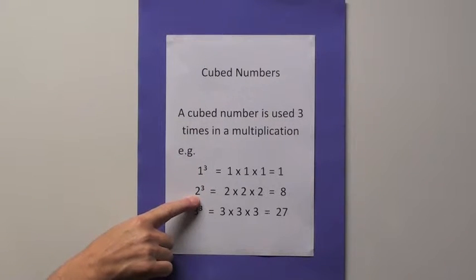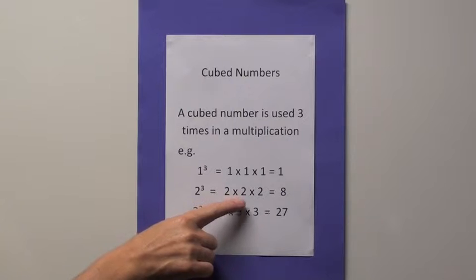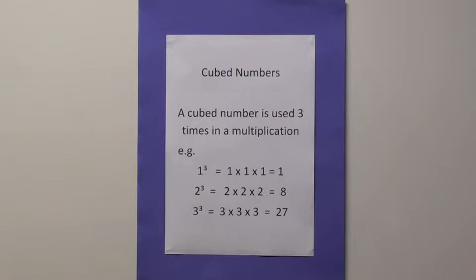2 cubed, or 2 to the power of 3, means 2 times 2 times 2, which equals 8. And 3 cubed, or 3 to the power of 3, equals 3 times 3 times 3, and the answer there is 27.